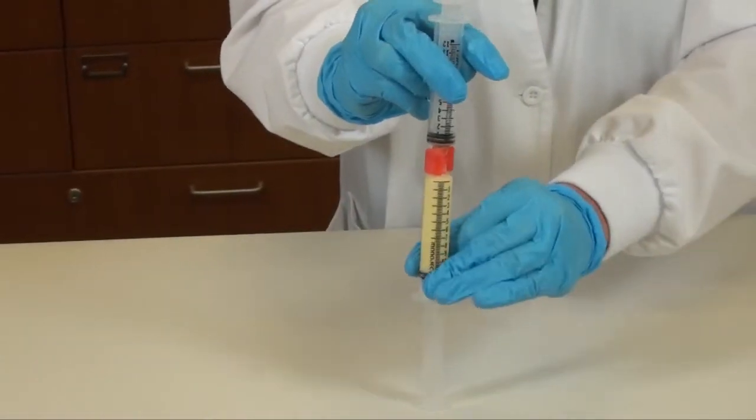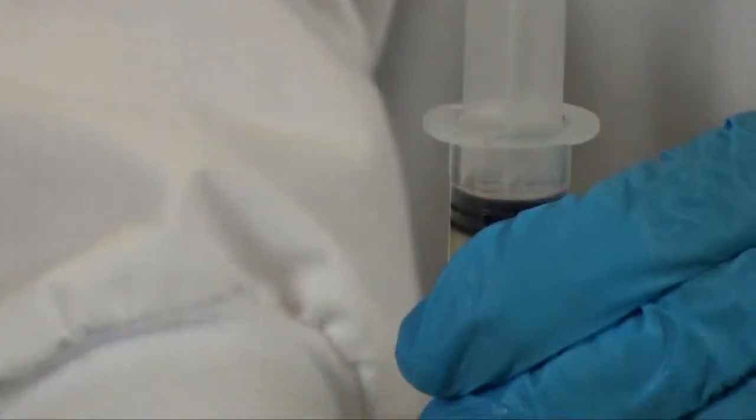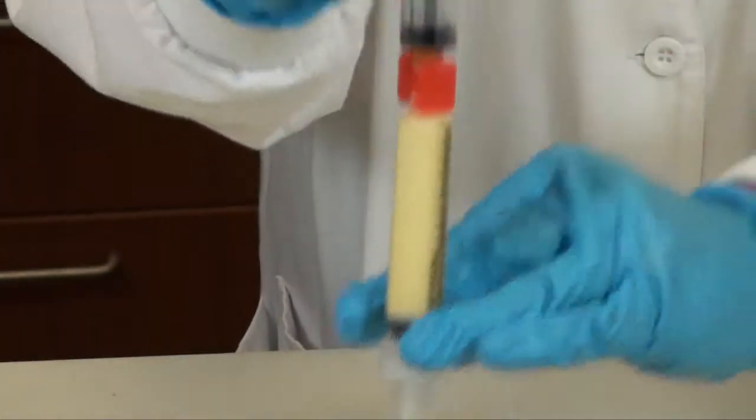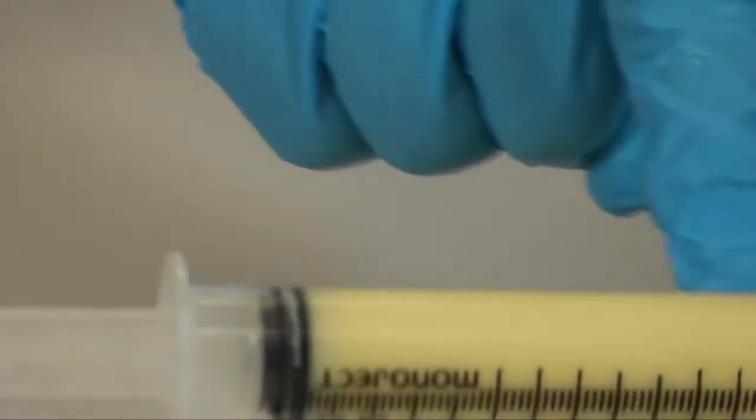But back and forth. Periodically check and make sure that both sides are still luer locked on and continue to do this until you have a uniform PLO gel.